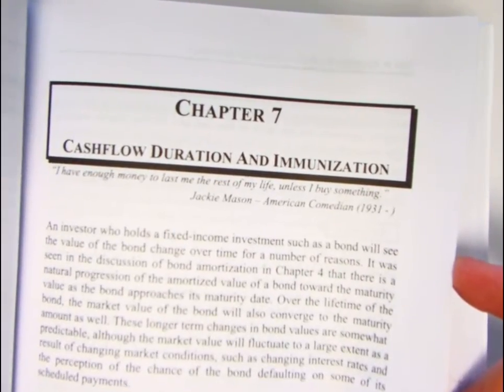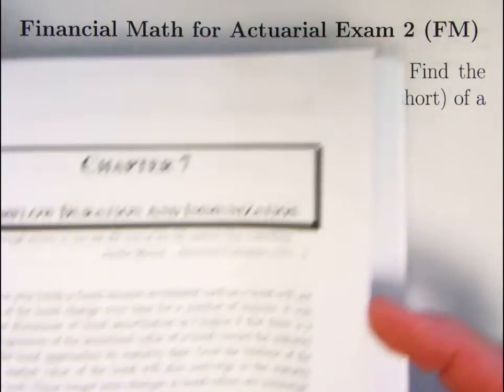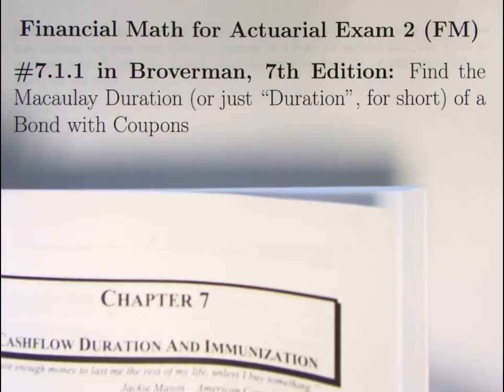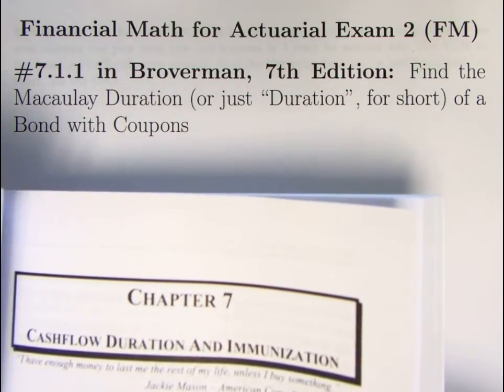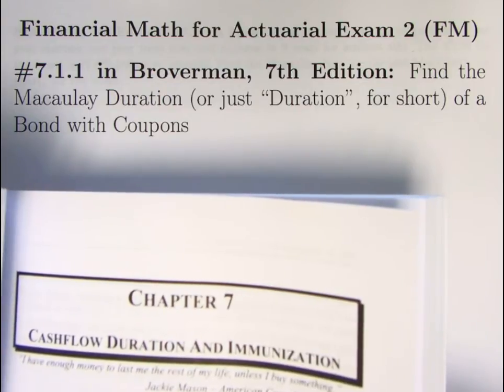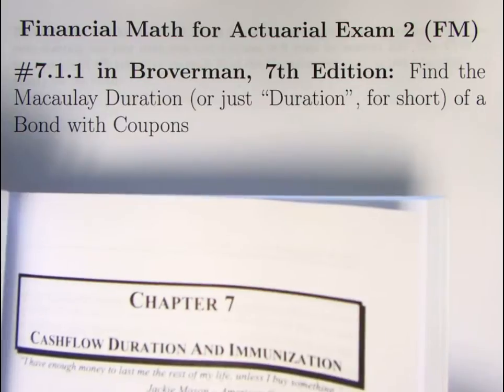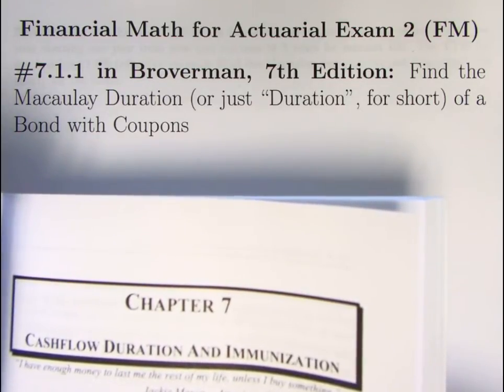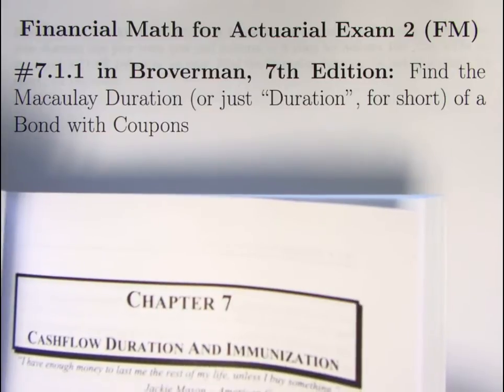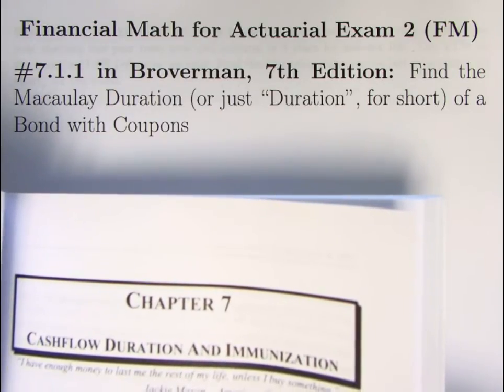Ultimately, it might take a while, but they do get pretty theoretical. It's probably the most difficult topic as you study for Financial Math for Actuarial Exam 2. During Problem 7.1.1, we'll be finding what's called the Macaulay duration, or just duration for short, of a bond with coupons. There's another kind of duration called a modified duration. Whenever you use that other kind, you do make sure you say the word modified. If you mean Macaulay duration, you can just say duration.